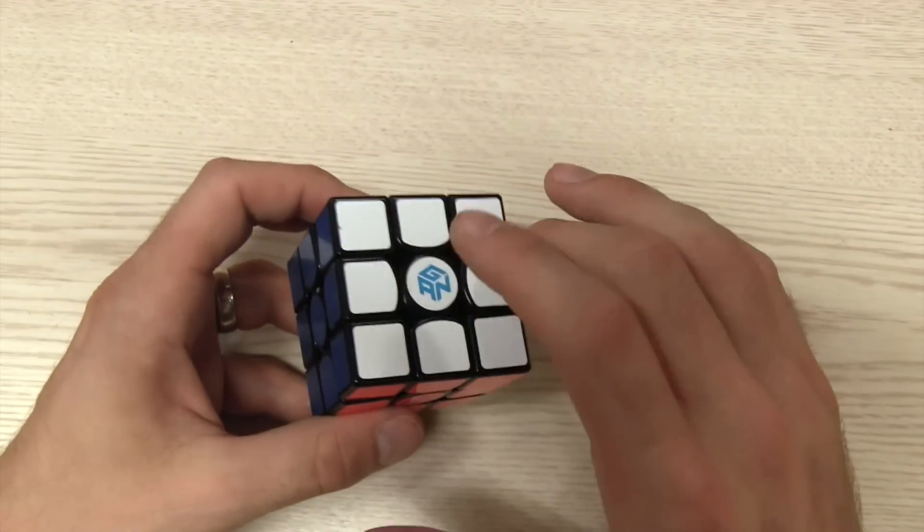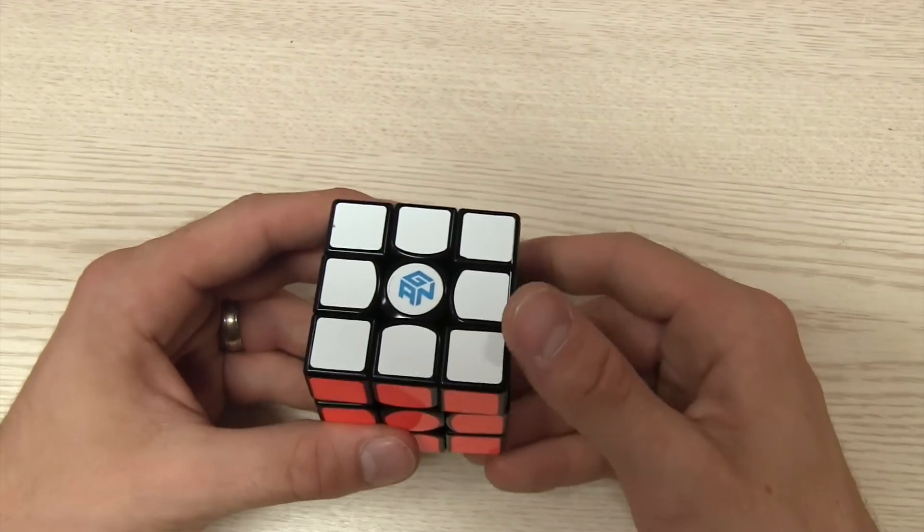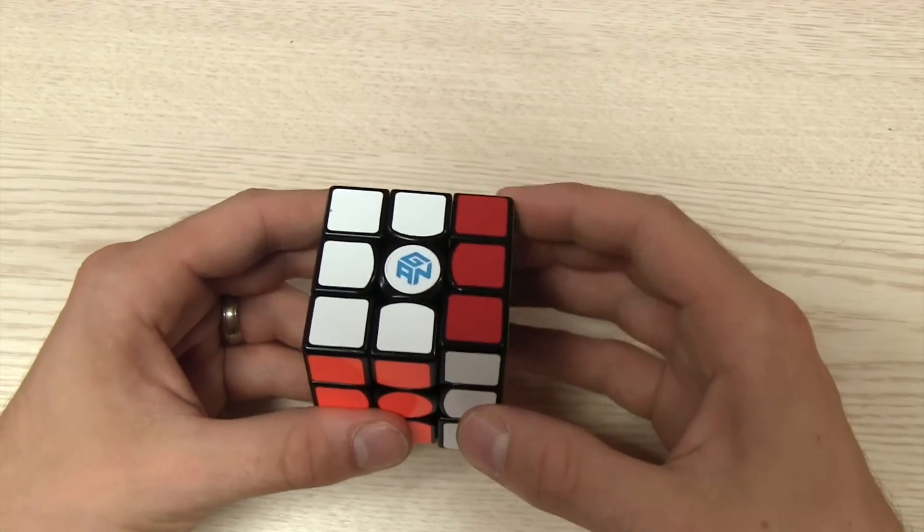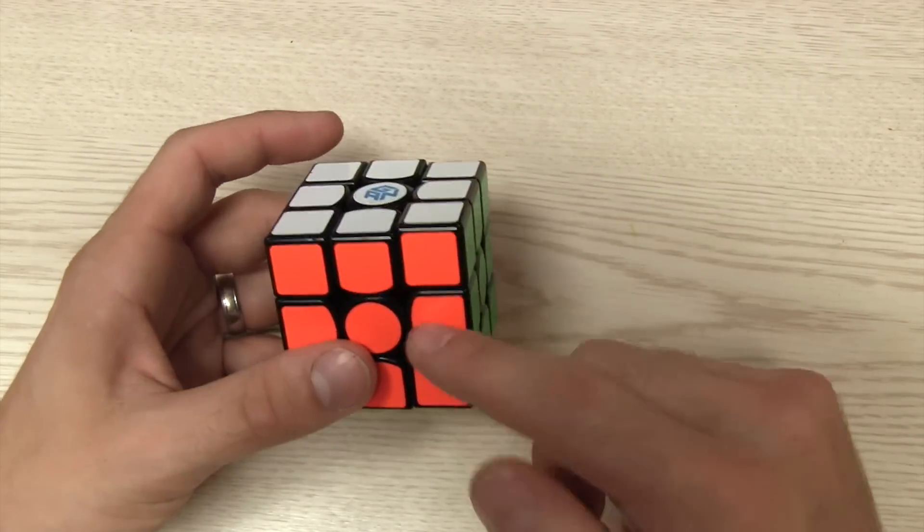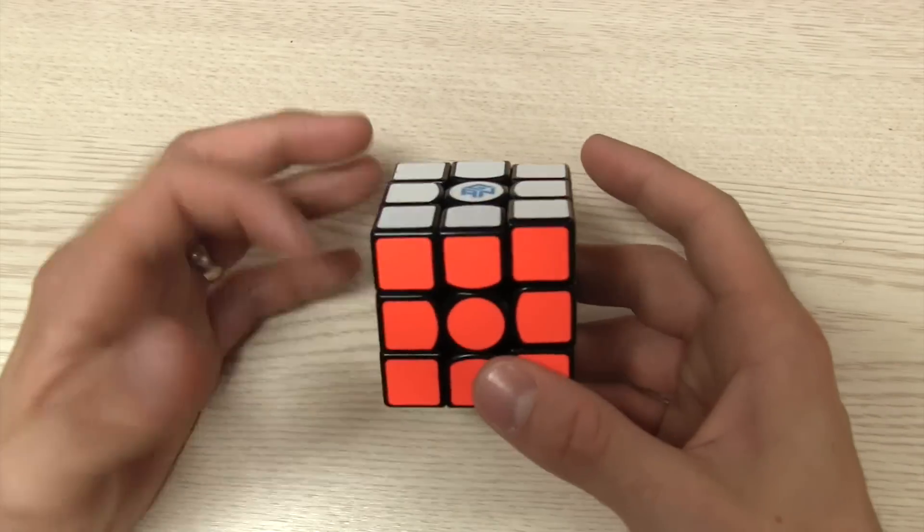The only awkward ones are when you have the ones on the very top, and all you do is do that move, and then you can set it up. So either doing an R' or an L move for over here.